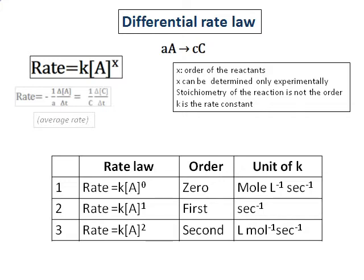Looking at the table, for rate equals K times A raised to the power of 0, the order is 0, and the unit of K is mol·L⁻¹·s⁻¹. As the order becomes 1, the unit of K changes to s⁻¹. And for a second order reaction, the unit of K changes to L·mol⁻¹·s⁻¹. So sometimes in questions, the unit of K will be given and from that we can get the order of the reaction. Or the order will be given and they can ask you to find the unit of K.